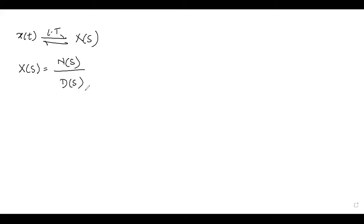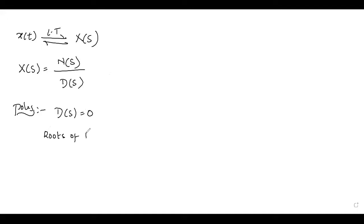The roots of the denominator — what are poles? The roots of the denominator, that means by equating D of s equal to zero, the roots of your denominator function are nothing but poles. And how do we represent poles in the s-plane? Using a cross mark. Now coming to zeros.